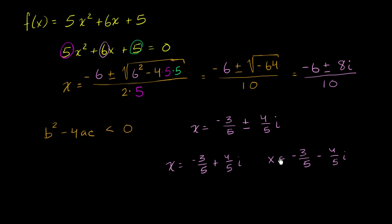And we also see that they are conjugates. The quadratic formula sets up a situation where, especially when the discriminant is less than zero and you get an imaginary number, you see where those conjugates appear.